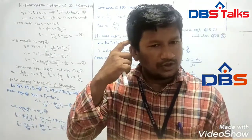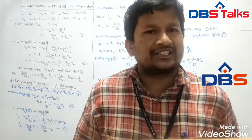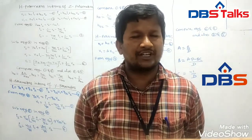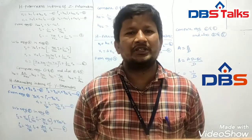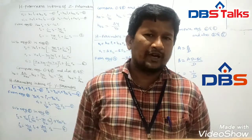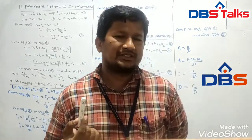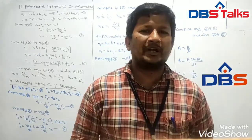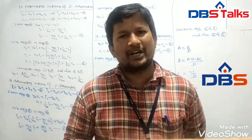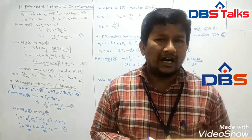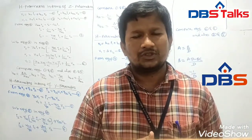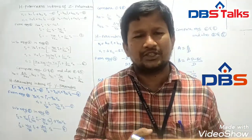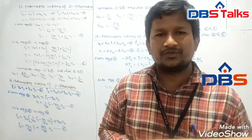Good afternoon students. Last video we discussed about the interrelation between the different parameters, such as Z parameters in terms of Y, ABCD, and H parameters, as well as Y parameters in terms of Z parameters, ABCD parameters, and H parameters. And also ABCD parameters derived in terms of Z parameters, Y parameters, and H parameters. Now coming to the H parameters, which must be derived in terms of Z parameters, Y parameters, and ABCD parameters.